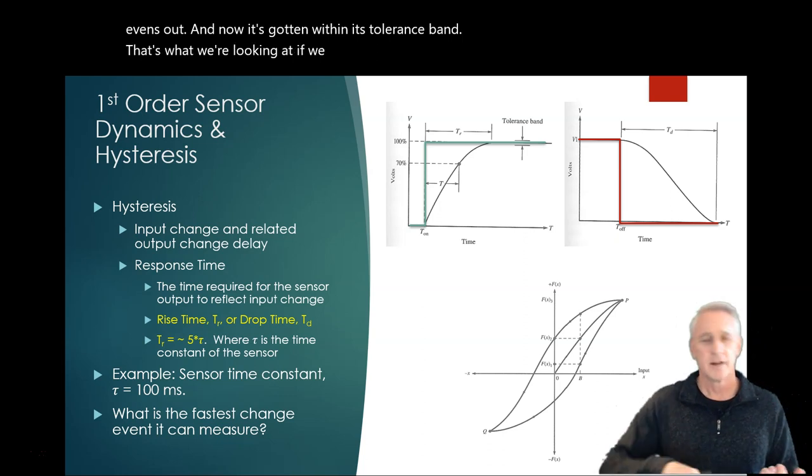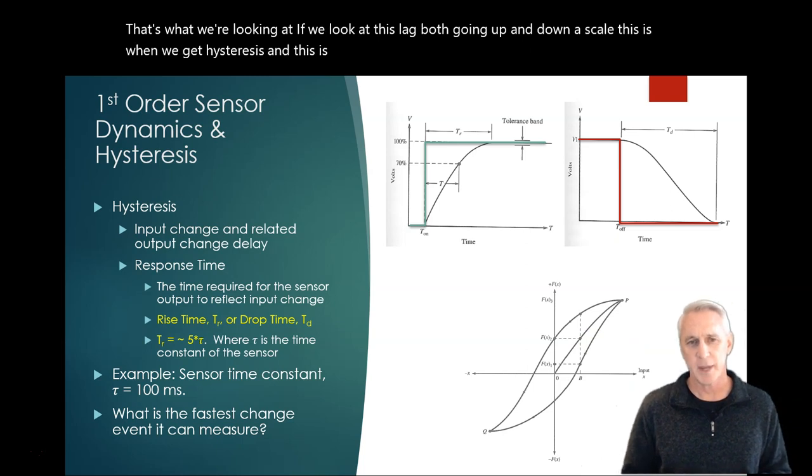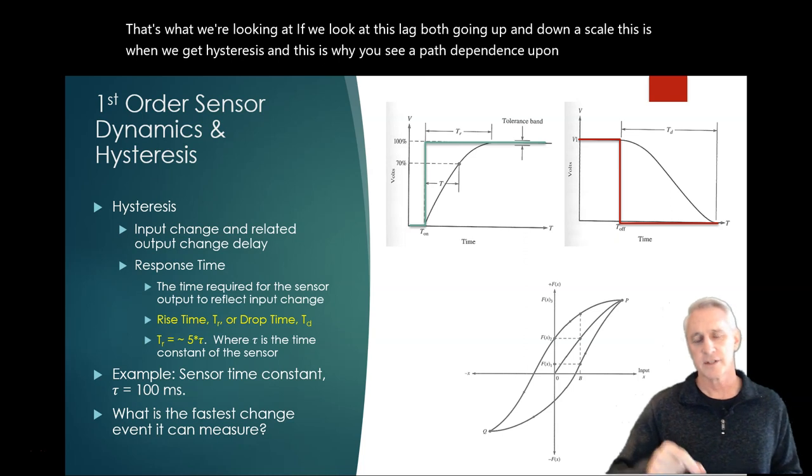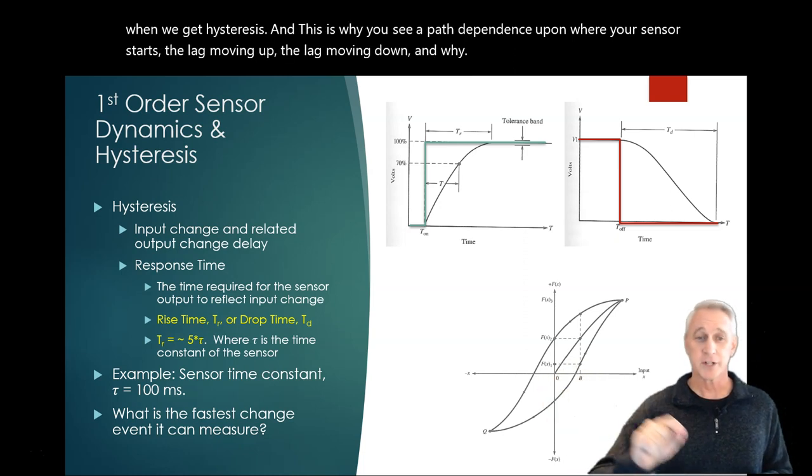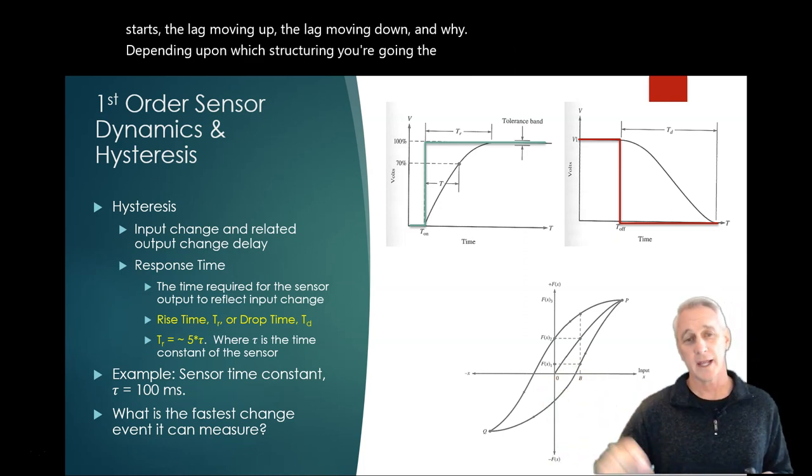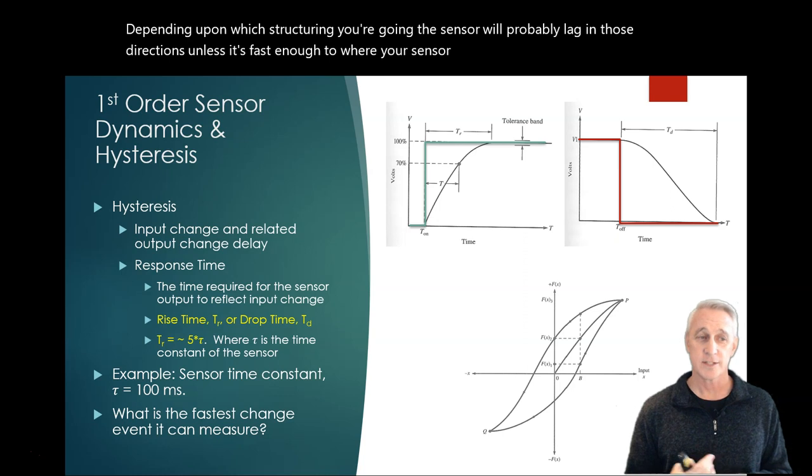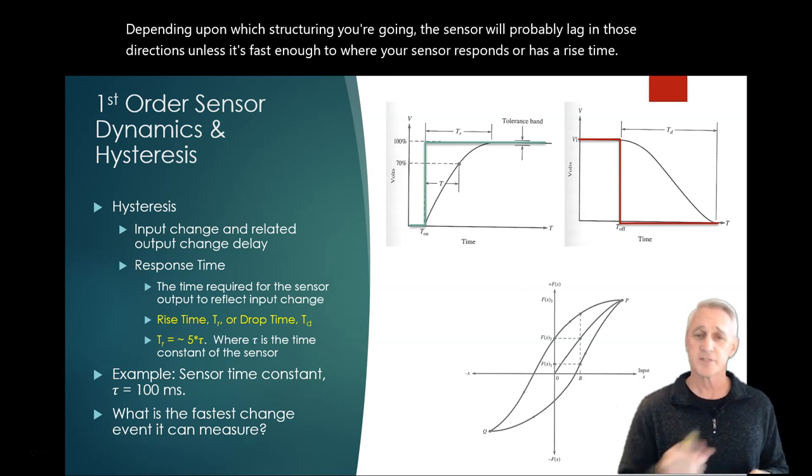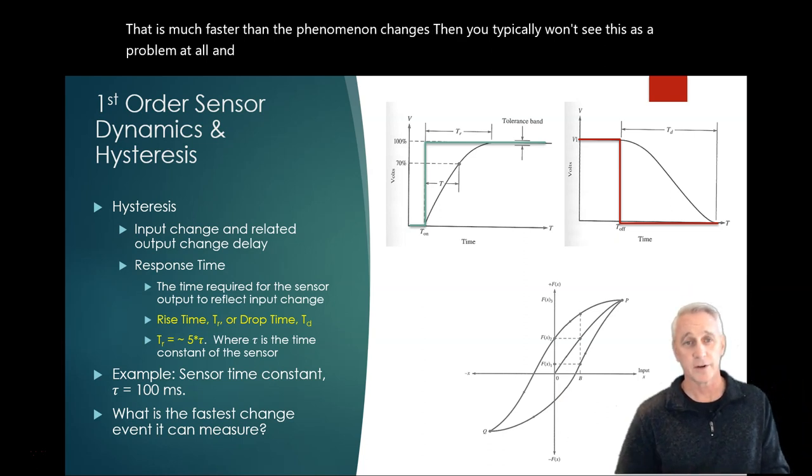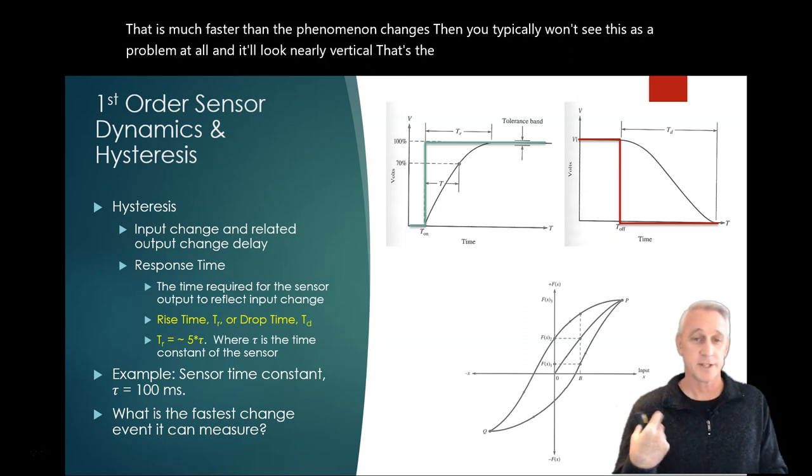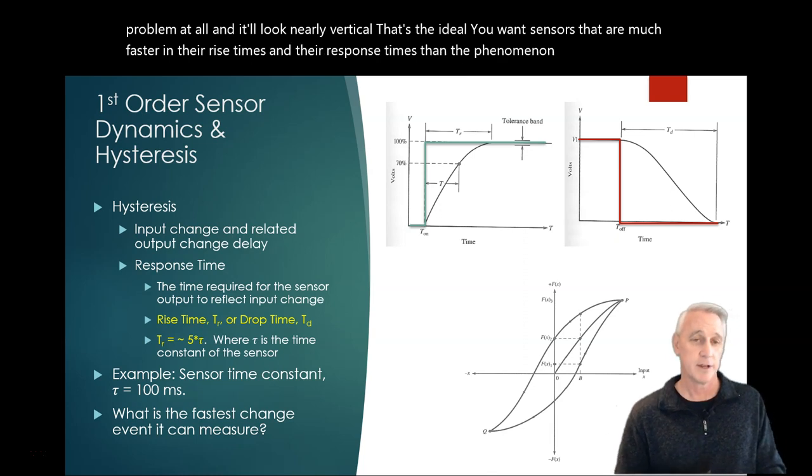There are sensors that are super fast and very responsive based upon the technology, and there are some that are slower. It really depends upon what you're trying to measure and how fast you're trying to measure it. What you want to make sure is that what we call the total rise time is probably approximately five times tau, and tau is a time constant for that sensor. In other words, five of those is about how long to where you get to where the sensor evens out, and now it's gotten within its tolerance band. If we look at this lag, both going up and down a scale, this is when we get hysteresis, and this is why you see a path dependence upon where your sensor starts.